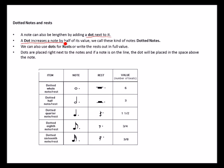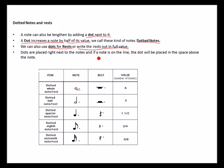Remember: a dot increases a note by half of its value. We call these dotted notes — for example, a dotted semibreve or dotted whole note. We can also use dots for rests. Remember, we cannot extend rests by using ties, but we can extend rests using dots, though preferably you can write the rest out in full to avoid confusion and make reading music easier and clearer.